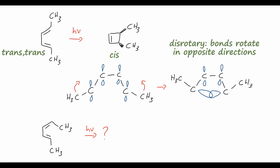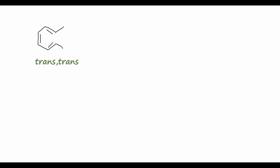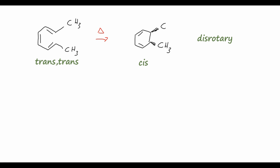Now that we've looked at the ring closing and opening of the cyclobutene product, we can look at the six-membered rings as well. If we take the substituted hexatriene in its trans-trans variant and expose it to heat, the ring closes to a cyclohexadiene backbone and the methyl groups are arranged cis on the ring — both coming out of the page toward us. This follows a disrotary mechanism. I'll leave it up to you to draw out the orbitals and convince yourself that the methyl groups are indeed rotating in opposite directions.